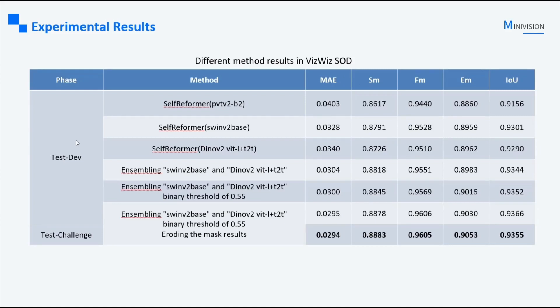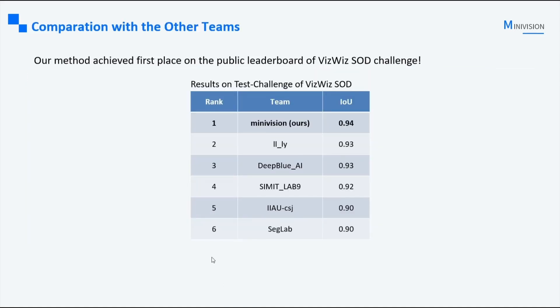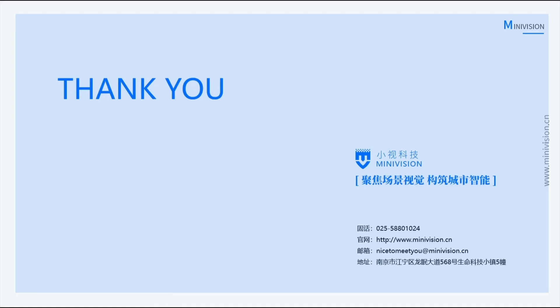Let's take a look at the final result of our method on the test dataset. Our method achieved an impressive IoU of 0.94 on the test challenge dataset. Our method outperformed other teams, earning us 1st place on the public leaderboard of the VVS SOD challenge. Thank you all for your attention and support. Have a nice day!